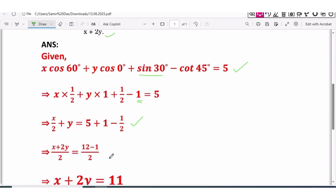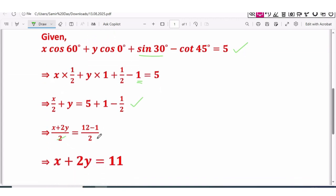6 into 2 is 12, minus 1 divided by 2. And here this 2 and this 2 will be cancelled, so x + 2y will be equal to 12 - 1.